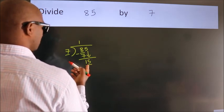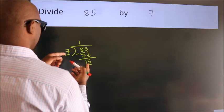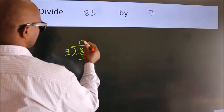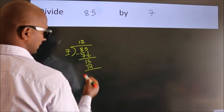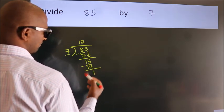A number close to 15 in the 7 table is 7 twos 14. Now we subtract. We get 1.